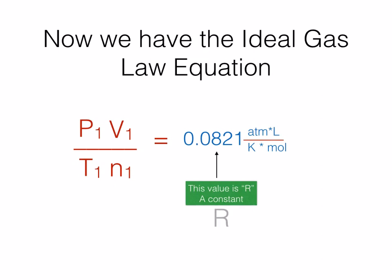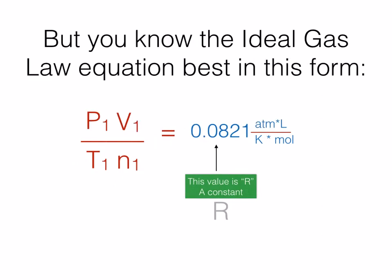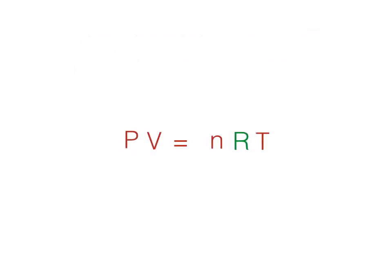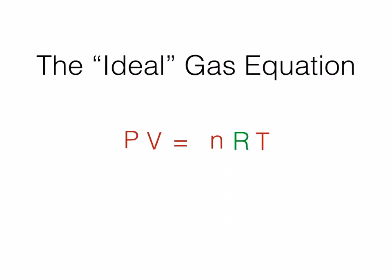This ideal gas constant R can be used to solve a lot of problems using the ideal gas law — and we're almost there. We're going to replace 0.0821 with R in the equation, and this now begins to look like the ideal gas law you're probably familiar with, especially if you've read the chapter. Cleaning it up, this is the ideal gas law. So you can see that by combining Boyle's, Charles', Gay-Lussac's, and Avogadro's laws, we arrive at both the combined gas law and the ideal gas law, which helps us solve any gas problem under near-ideal conditions.